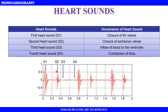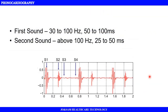S1 and S2 will always be visible. Comparing the first and second sounds: S1 has a louder intensity, while S2 is comparatively less. For frequency comparison, S1 frequency is around 100 Hz, while S2 frequency is above 100 Hz. For time duration, S1 duration is 50 to 100 ms, and S2 duration is 25 to 50 ms.